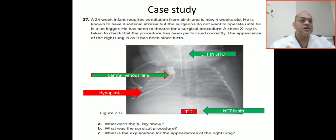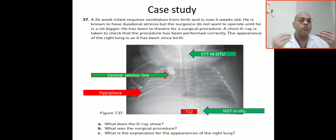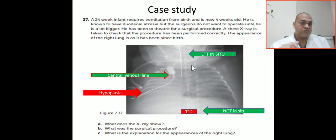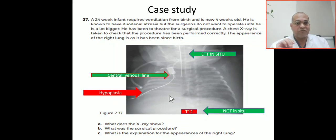The right hemithorax shows white-out — no aeration at all. Regarding what the X-ray shows, we comment on the lines. There are three lines (shown in green). The first is the ETT, which is in the correct position in the trachea. The NGT goes from top down to the stomach and is also in the proper position.